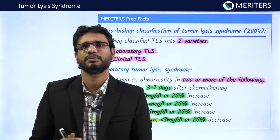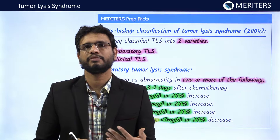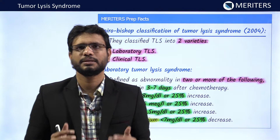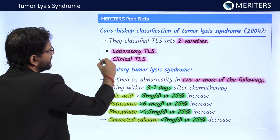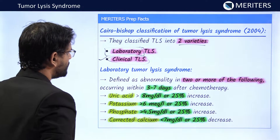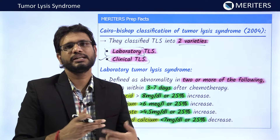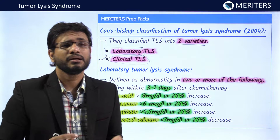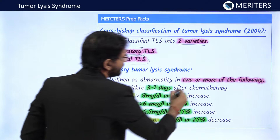To diagnose TLS, Cairo and Bishop provided a classification in 2004. There are two types: laboratory TLS and clinical TLS. Laboratory TLS involves laboratory findings — specifically the levels of calcium, potassium, uric acid, and phosphate. It is defined as abnormality in two or more of the defined values occurring within three to seven days after chemotherapy.